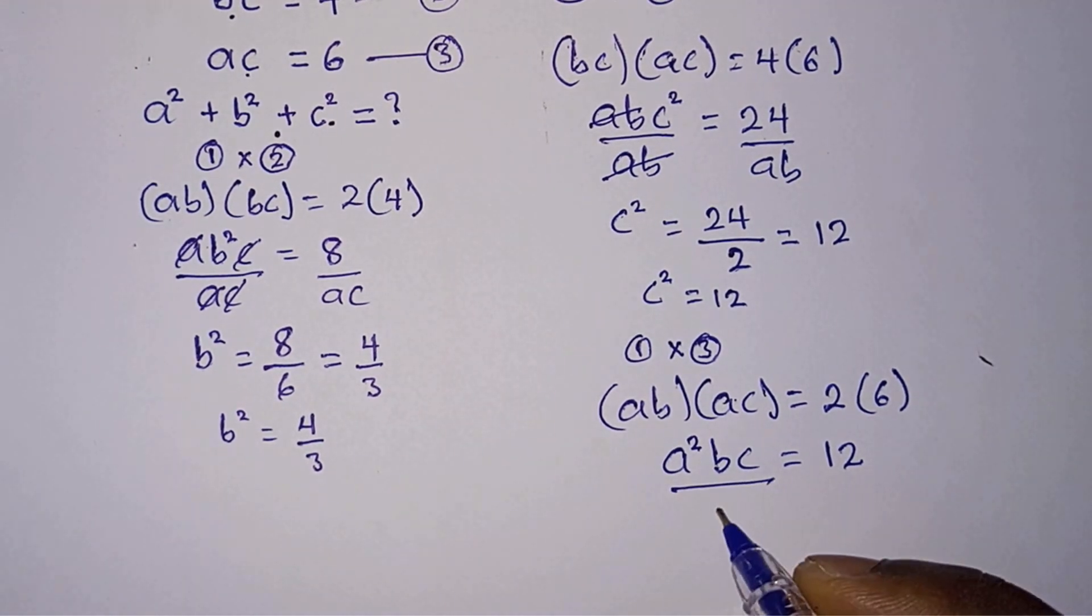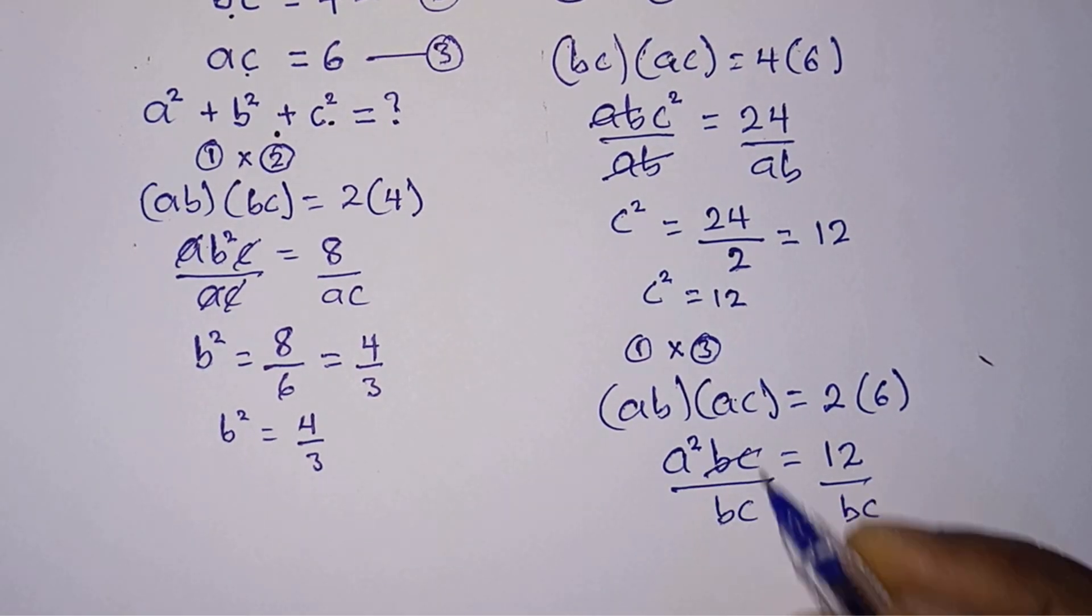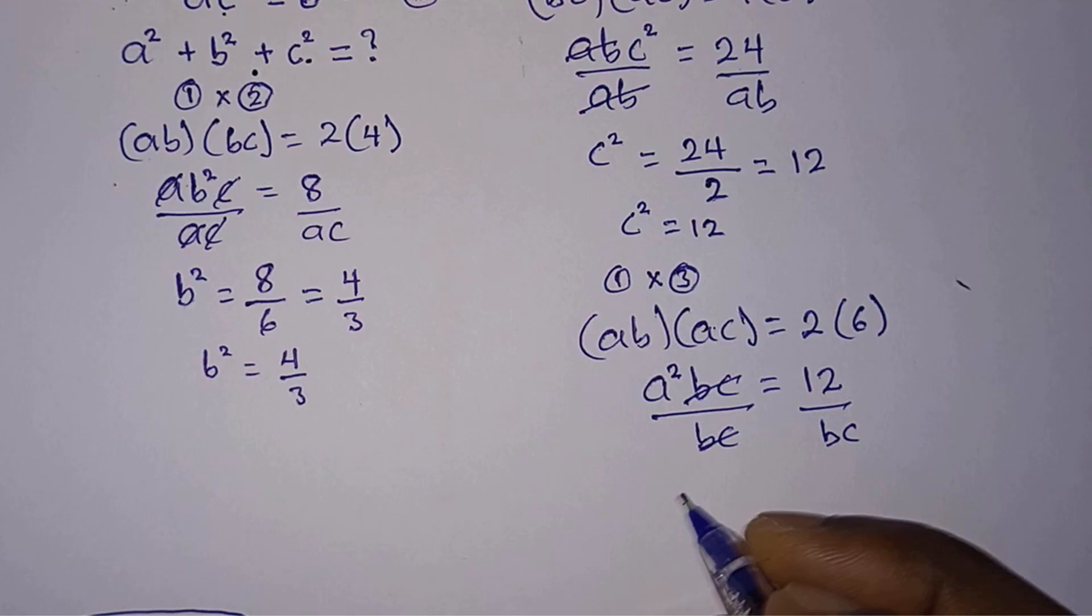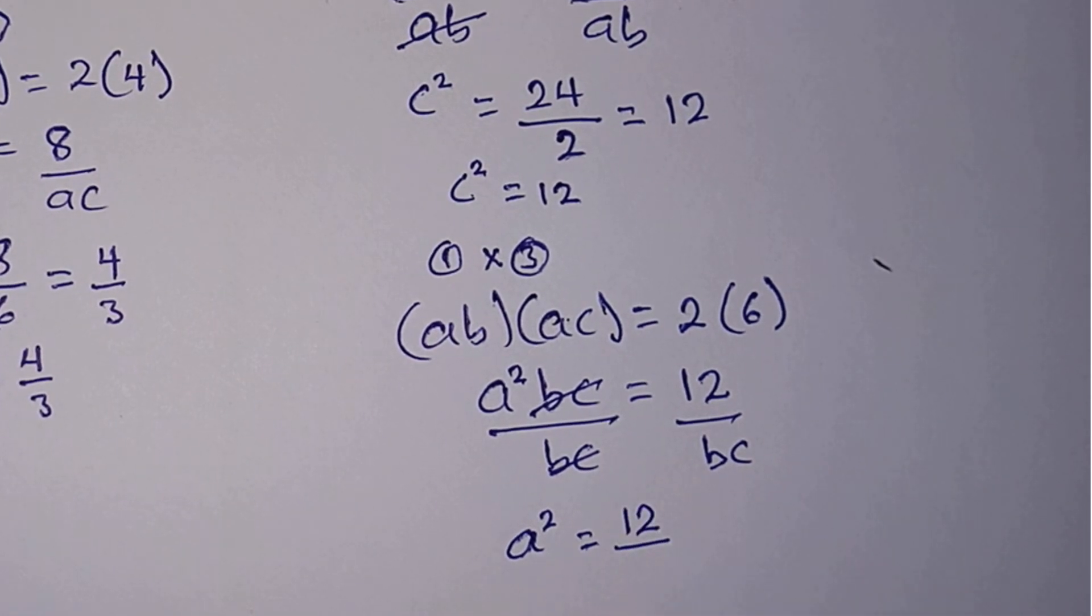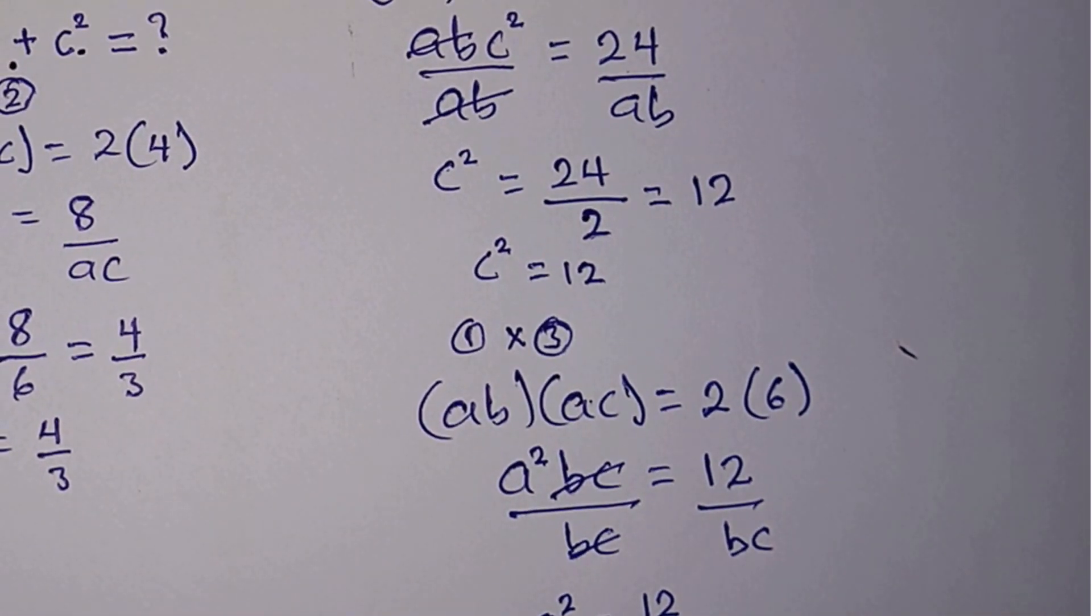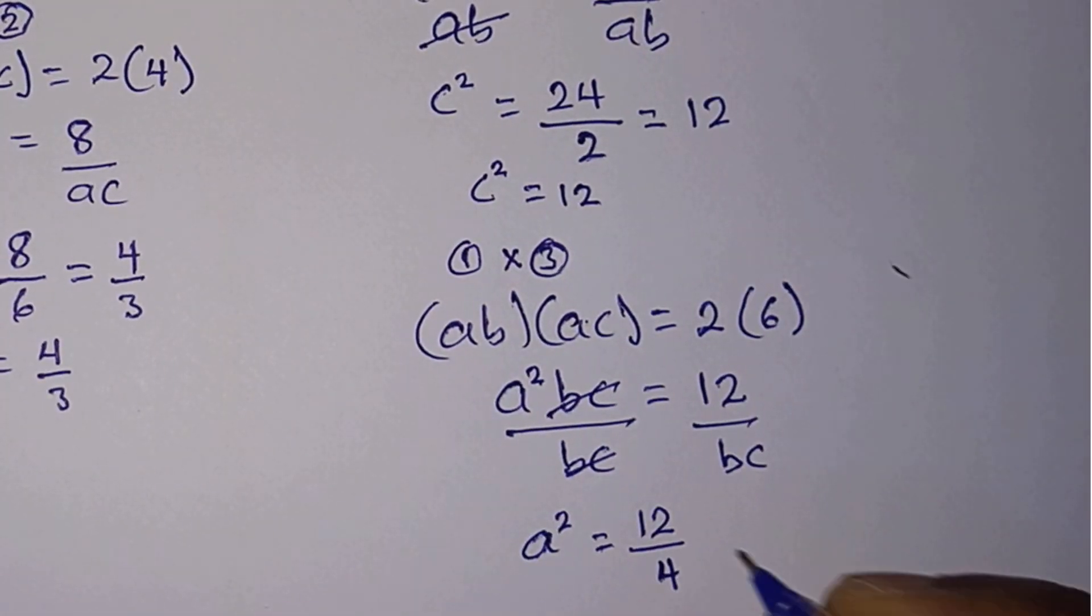Then we will divide each side of the equation by bc. So this and this will go. a² = 12 divided by bc. From equation 2, bc = 4. So we have 4 here. 12 divided by 4 is 3.